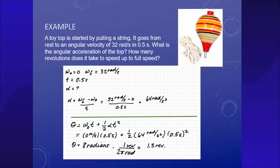I've got an example for you. You have a top that you spin by pulling a string. It goes from rest to an angular velocity of 32 radians per second in half a second. What's the angular acceleration of the top? And how many revolutions does it take to speed up to full speed?